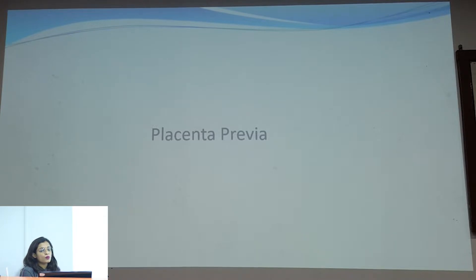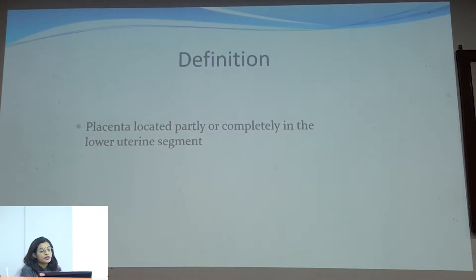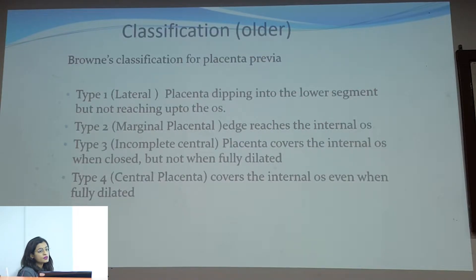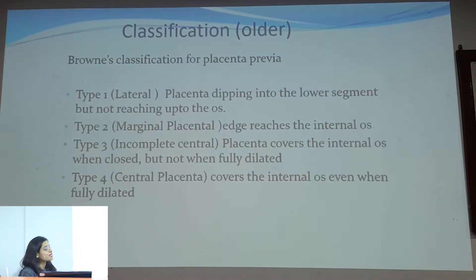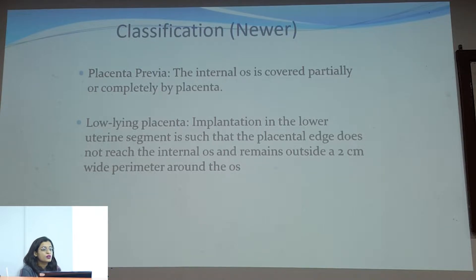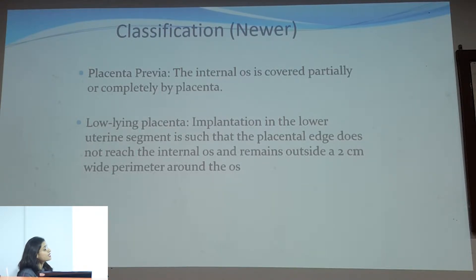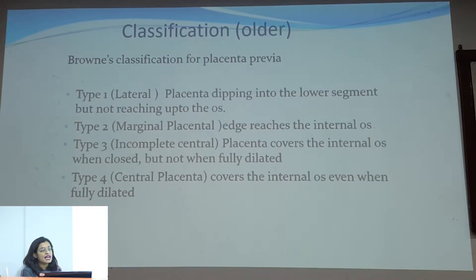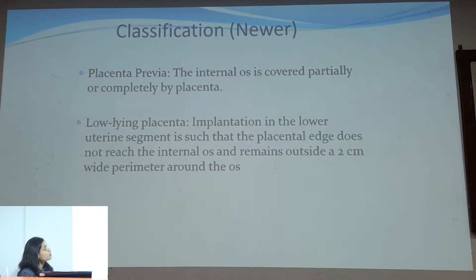The most common topic in antepartum hemorrhage is placenta previa. Placenta previa is implantation of the placenta over the lower uterine segment. There was a classification known as Brownie's classification in older days, which has now been replaced by a newer classification. In the newer classification, there are only two categories: placenta previa and low-lying placenta, whereas the previous classification had four categories.